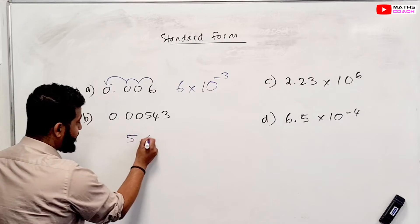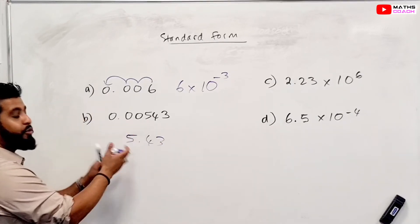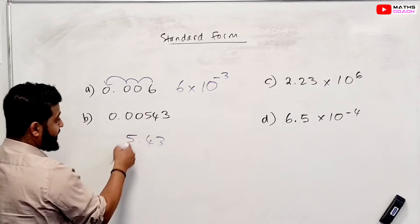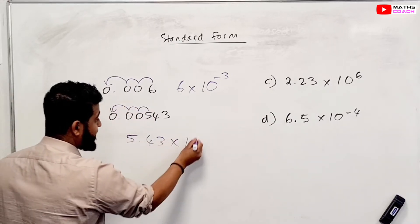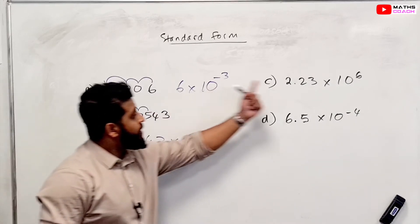This one, it should be 5.43. Let's just write that down standard, because remember, this value here has to be between 1 and 10. So the 5 for it to end up here, 1, 2, 3 once again. So times 10 to the power of minus 3, because it's a decimal.